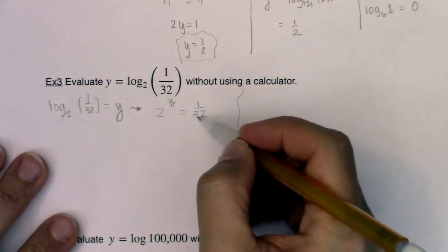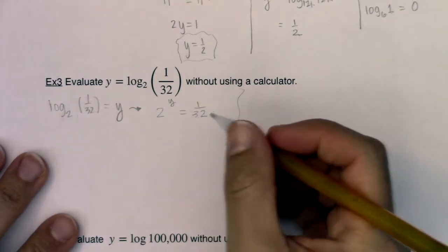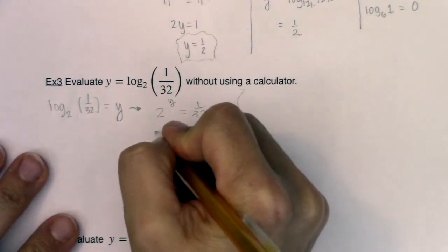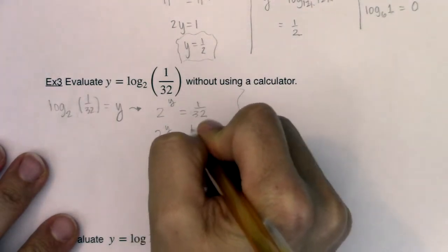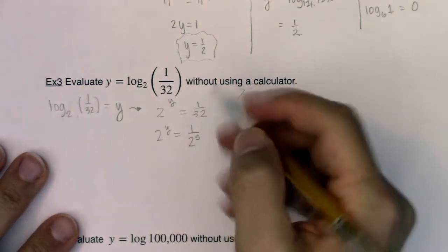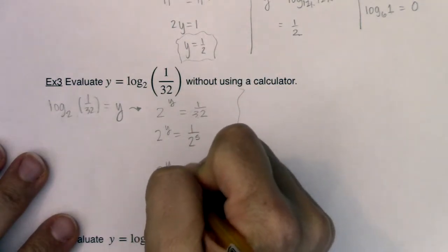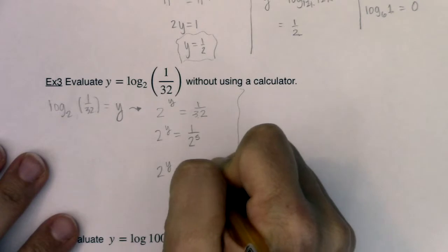Now for 1 over 32, I recognize 32 is a power of—I'm sorry, a power of 2, right? This is like saying 1 over 2 to the 5th, but because it's in fraction form, I'm going to swap that fraction out with a negative exponent.